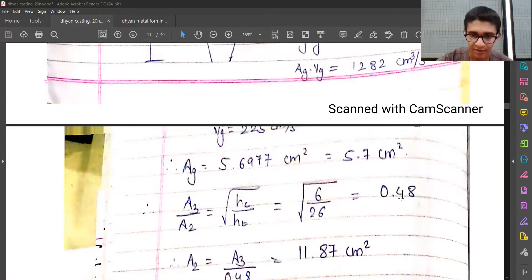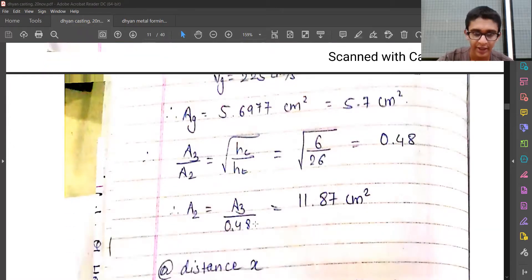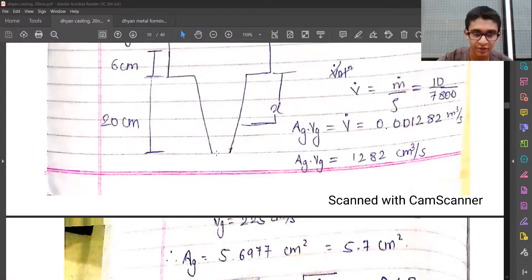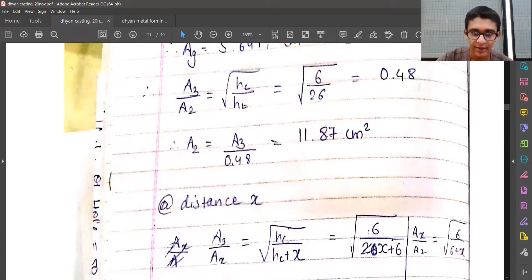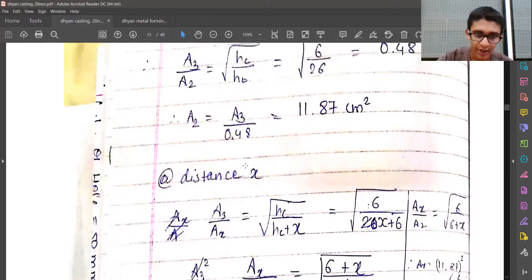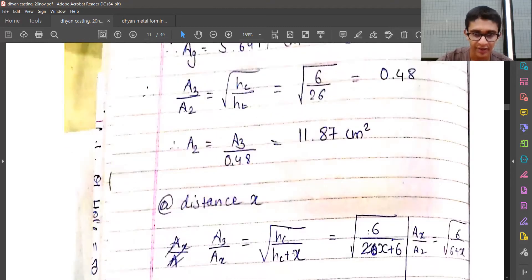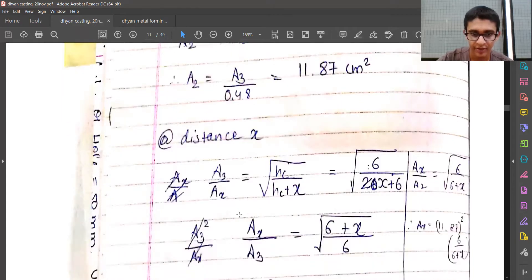a3 we already figured out - a3 is equal to ag. 3 is the location where the gate starts or where is the gate. So a2 from this equation will be 11.87 centimeters square. And using the same concept we can take any random height x and figure out the area at any random location x.